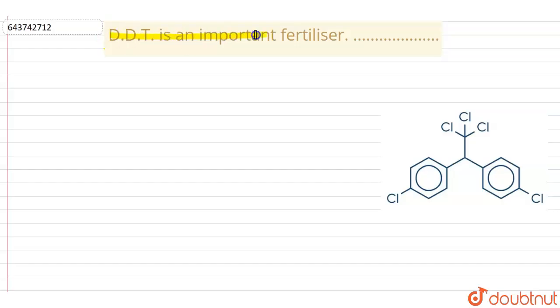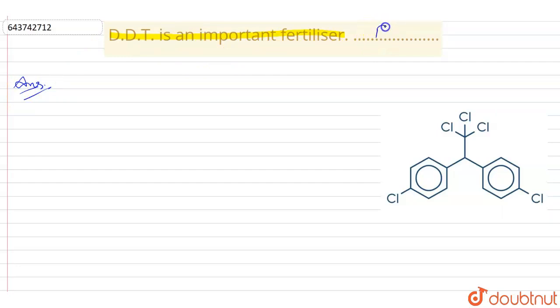DDT is an important fertilizer. We have to tell whether the given statement is true or false. DDT is not an important fertilizer, therefore the given statement is false.